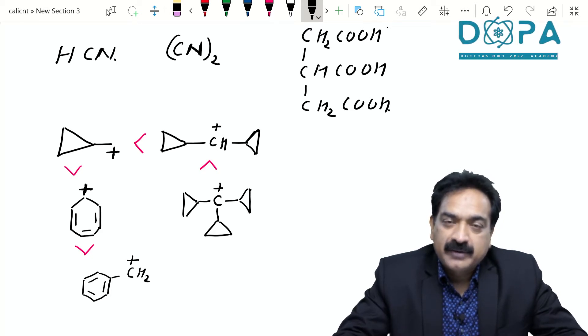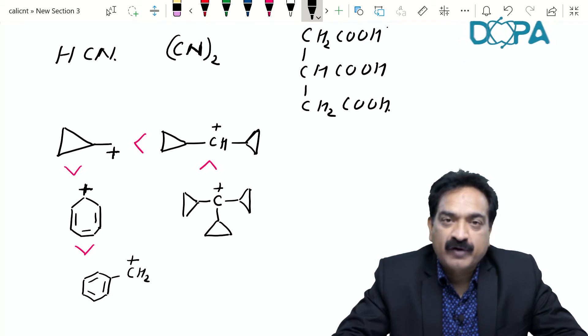Do you know while naming compounds like COH group, if we have this kind of structure, the COH group is not included in the parent chain and it is named propane one two three tricarboxylic acid.